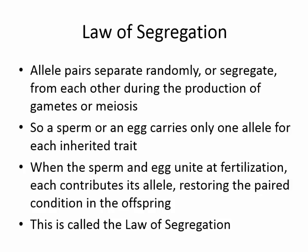We go on to Mendel's law of segregation. In this law, he says allele pairs separate randomly, or segregate, from each other during the production of gametes or meiosis. A sperm or an egg carries only one allele for each inherited trait. When the sperm and egg unite at fertilization, each contributes its allele, and thus it restores the paired condition in the offspring. And that is the law of segregation.